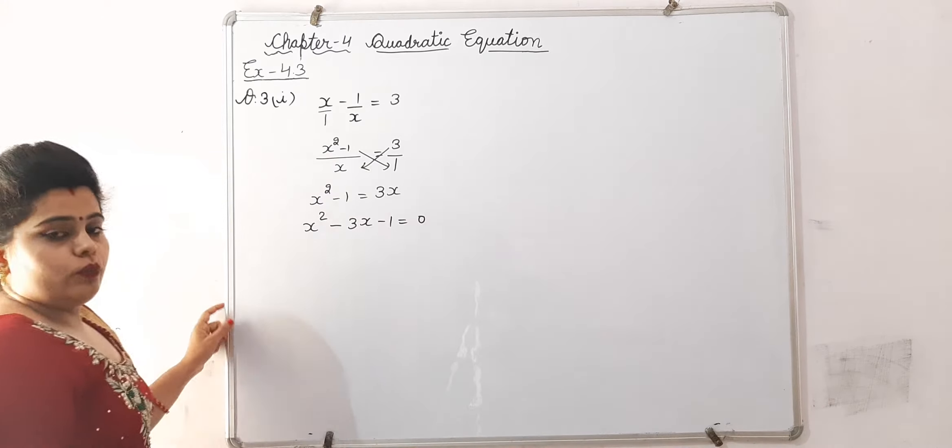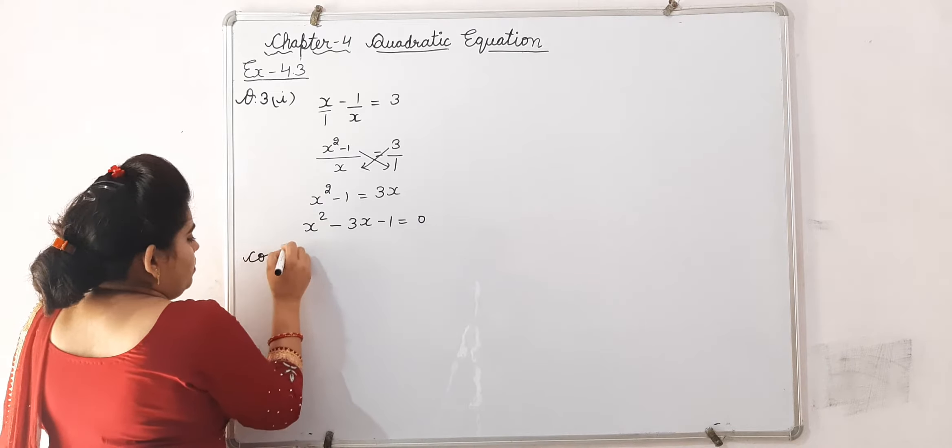x square minus 1 is equal to 3x, and it can be written as x square minus 3x minus 1 is equal to 0. Now comparing it with